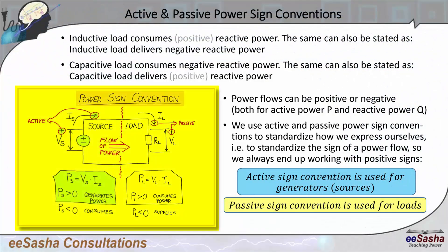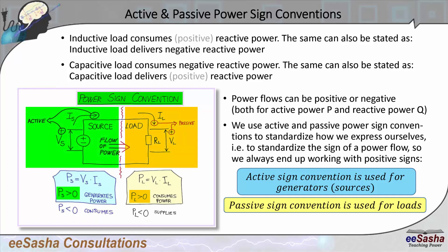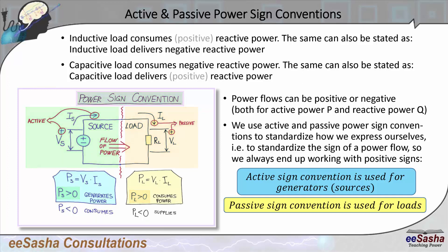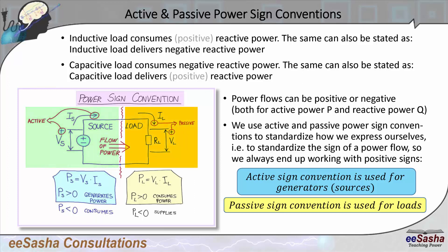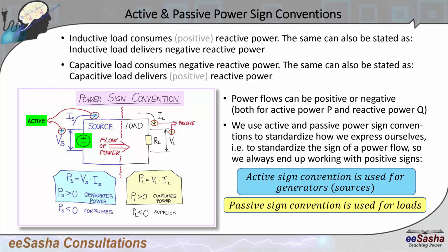Here I have something that I use for students — this power flow convention where you use certain signs for a certain side of the power system. You have a source side and a load side. The source side is active because that's your generation there, and the load side is normally considered to be passive.